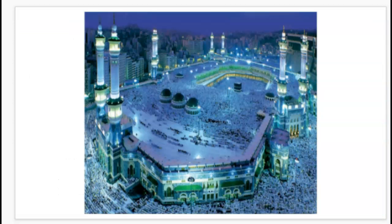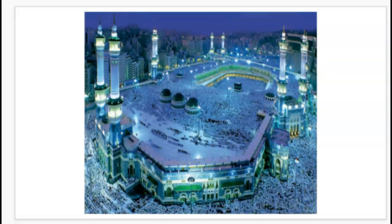If we notice this picture, it's an incredible picture. It looks kind of like a sea of white, but you can definitely tell there are people, and they are surrounding this black cube right here, which is known as the Kaaba. This is one of the most holy and sacred sites in all of the world for Islamic followers, particularly in the city of Mecca.